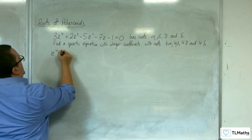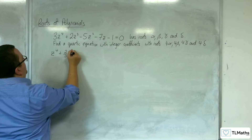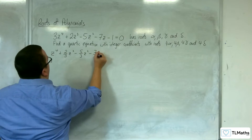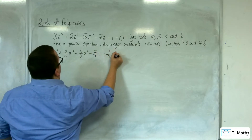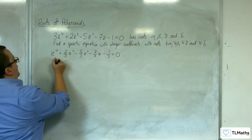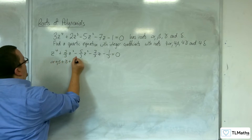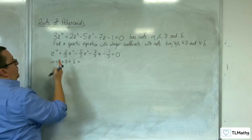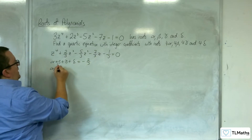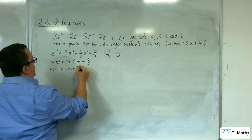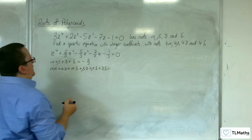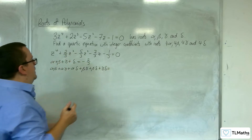Dividing through by 3 gives z⁴ + (2/3)z³ - (5/3)z² - (7/3)z - 1/3 = 0. That's the first stage. From that, we can say alpha + beta + gamma + delta = -2/3. We can also see that alpha·beta + alpha·gamma + alpha·delta + beta·gamma + beta·delta + gamma·delta = -5/3.